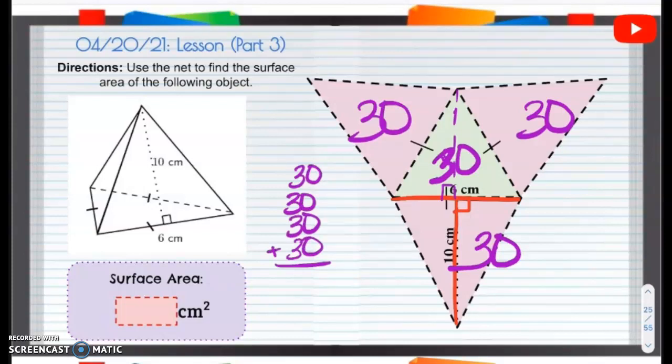we add them together, we have that zero there already. So I get 120 centimeters squared, centimeters squared, because it's the surface area. And that's going to be it for our lessons. Great job. Thank you.